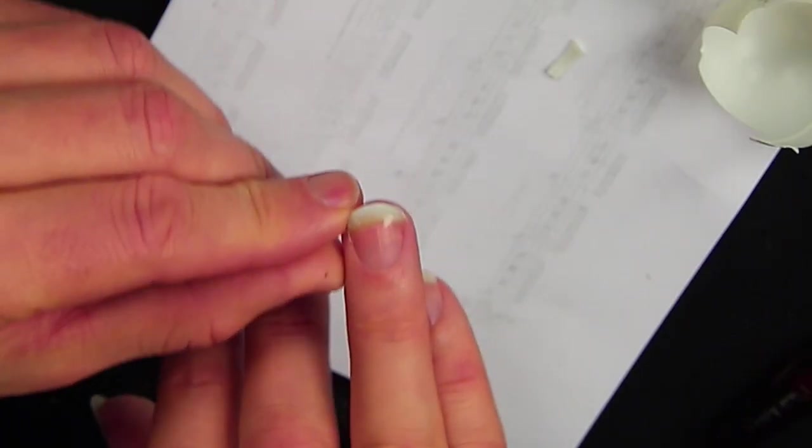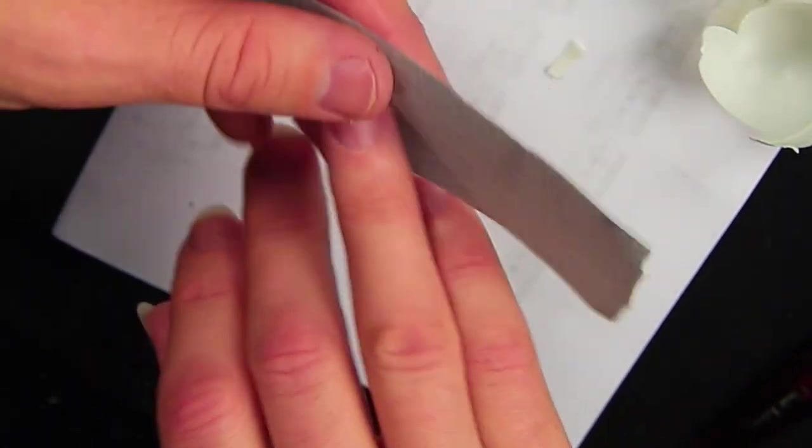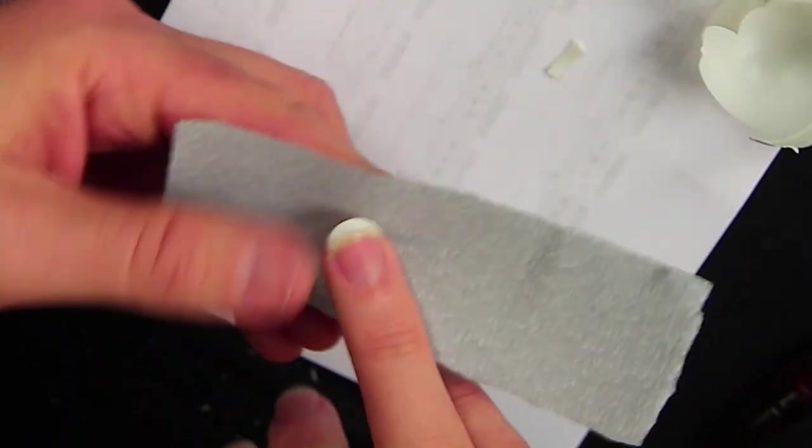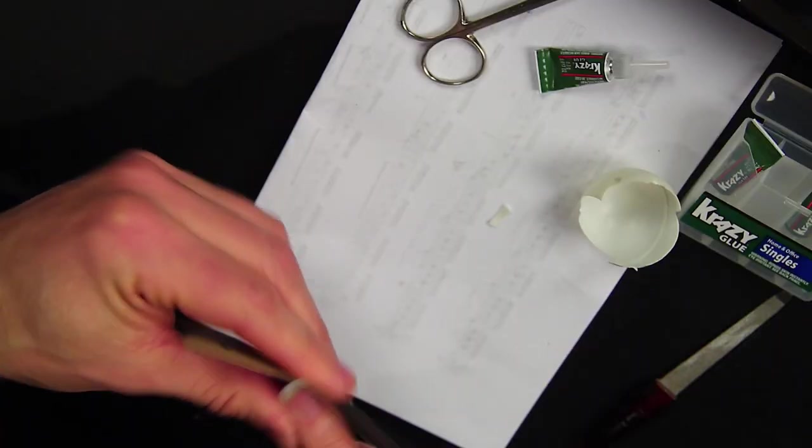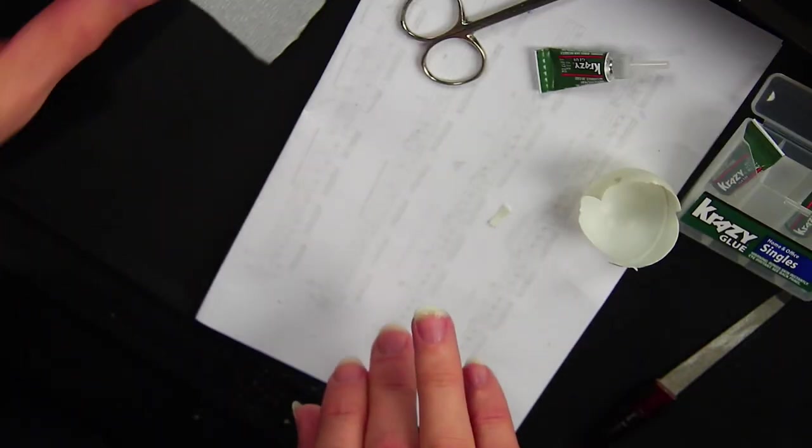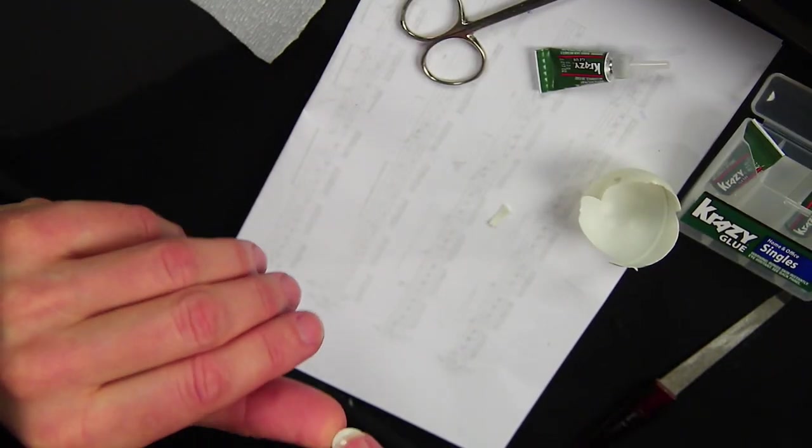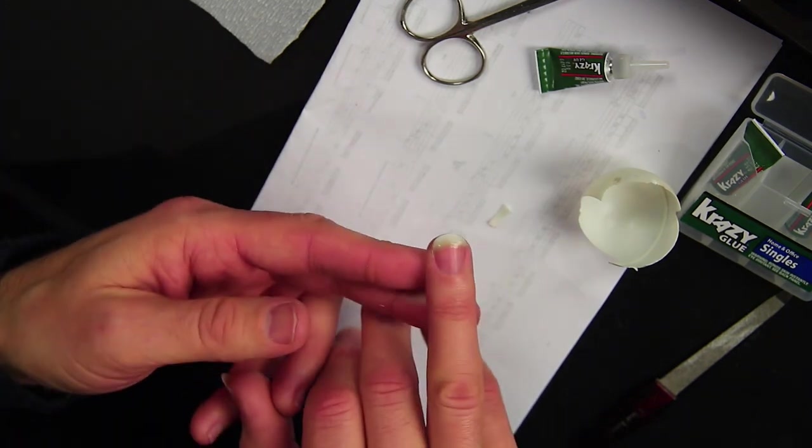So when that dries, you can take your nail paper and file and just do whatever it is that you normally do to your nails just to get it all buffed out. Take it over to your guitar, get it to where the tone's good and just treat it like you would an ordinary nail.